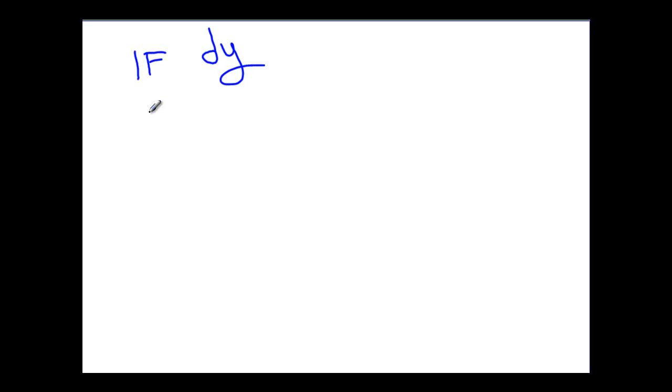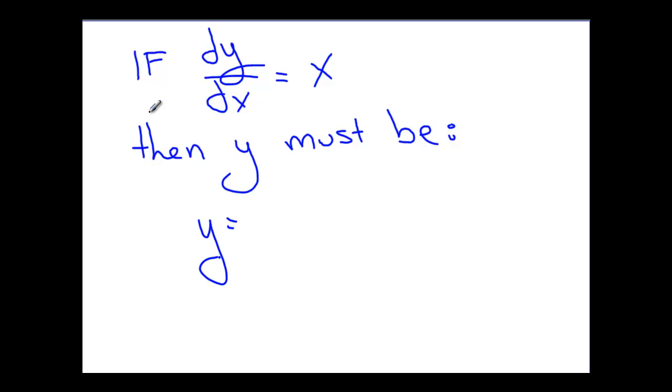So let's think about this. If dy/dx is equal to x, then y must be what? What do we have to do here? If you think about it, this is simply an anti-derivative question. Right? We're starting with the derivative and we're asking what did this come from?